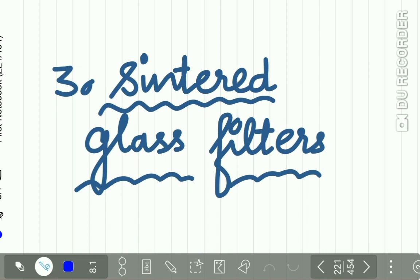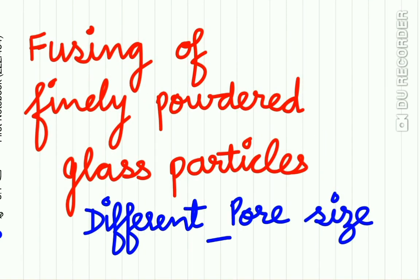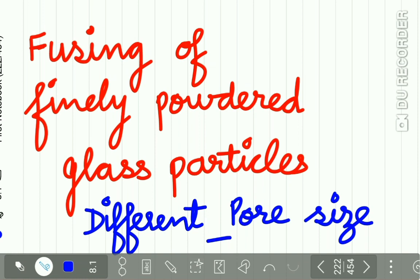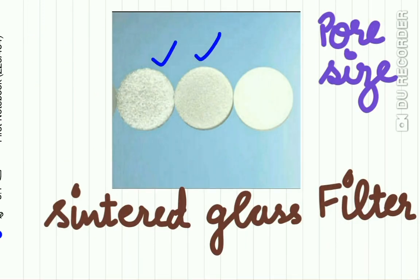The third type is the sintered glass filter. These are prepared by fusing finely powdered glass particles. The pore size of sintered glass filters varies, with different grades available.